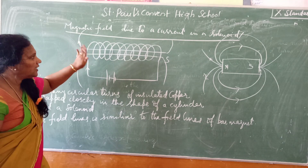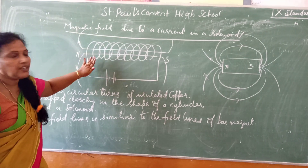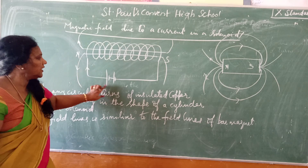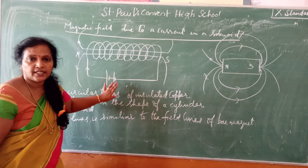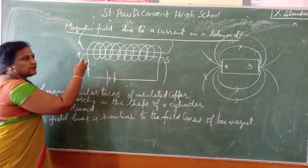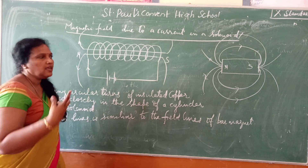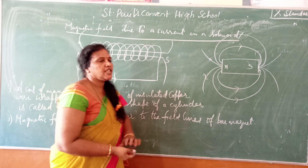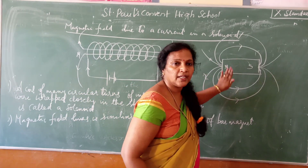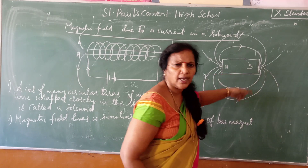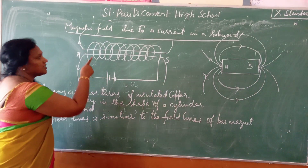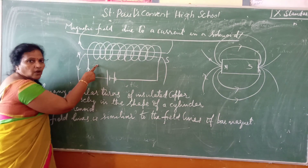Let us see the magnetic field lines around this solenoid that is connected to a battery. The magnetic field lines will be in the same pattern as in the case of a bar magnet. You know how the magnetic field pattern will be around a bar magnet? Same way you can find out in the case of a solenoid.